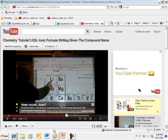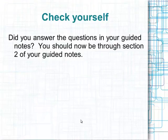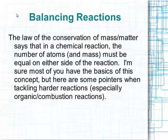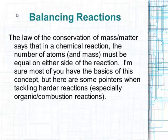Now make sure you answer all questions from section two of your guided notes. Sections three and four go pretty quick. Let's start with balancing reactions. Make sure you know what the law of conservation of mass says: in any chemical reaction, the number of atoms and their mass must be the same on both sides — reactants and products.